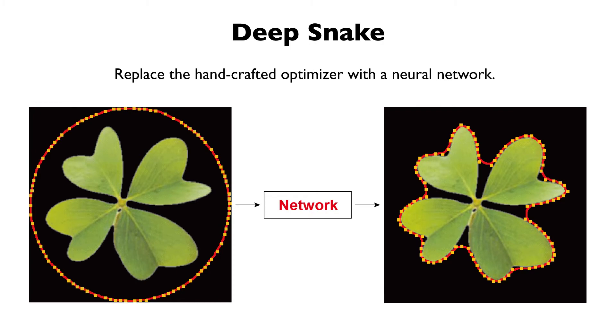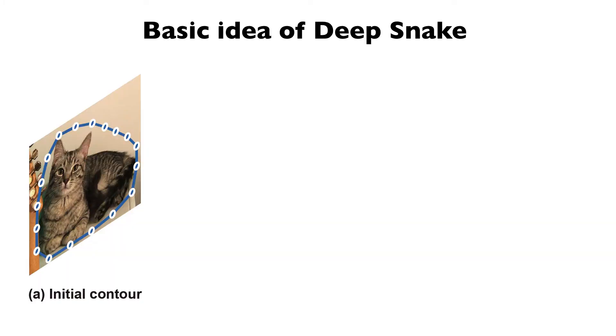To overcome these problems, we propose DeepSnake, which replaces the hand-crafted optimizer with a network. Now we introduce the basic idea of DeepSnake.